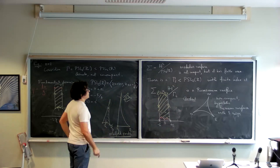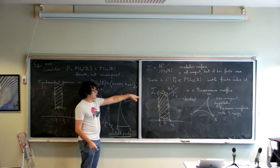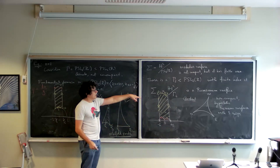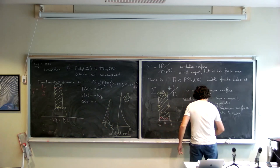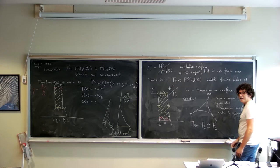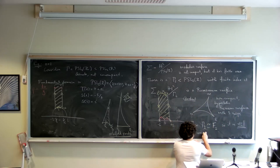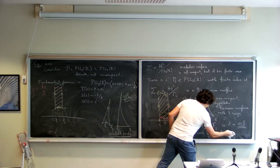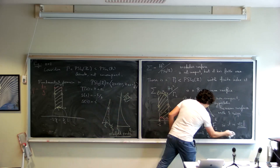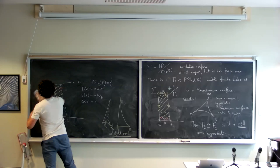There is also a finite-index subgroup Γ₂ inside PSL(2,Z) such that σ₂ = H2/Γ₂ is an actual Riemannian surface. This is a non-compact hyperbolic surface — in fact a triply-punctured sphere with three cusps at 0, 1, and ∞. Interestingly, Γ₂ is isomorphic to the free group on two generators, so it is still word hyperbolic even though it does not act cocompactly.